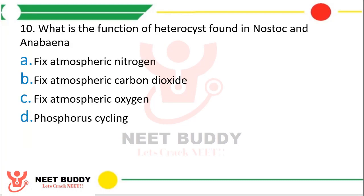Question 10: What is the function of heterocysts found in Nostoc and Anabaena? Option A fix atmospheric nitrogen, option B fix atmospheric carbon dioxide, option C fix atmospheric oxygen, or option D phosphorus cycling. The correct answer is option A — heterocysts are used for fixing atmospheric nitrogen.